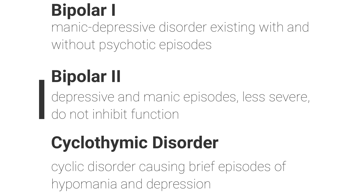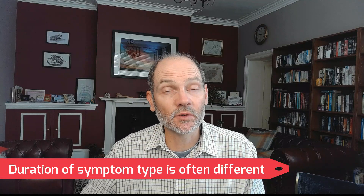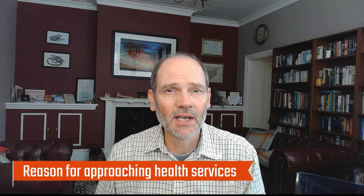Bipolar 1 is a manic depressive type disorder that can exist with or without psychotic episodes. Bipolar 2 involves alternating depressive and manic episodes that are less severe and don't really inhibit function. Cyclothymic disorder is a cyclic type that causes brief episodes of hypomania and depression. In clinical practice, depressive symptoms tend to last longer, while manic symptoms are more acute and often bring people into contact with services due to overactivity and driven quality causing significant distress.